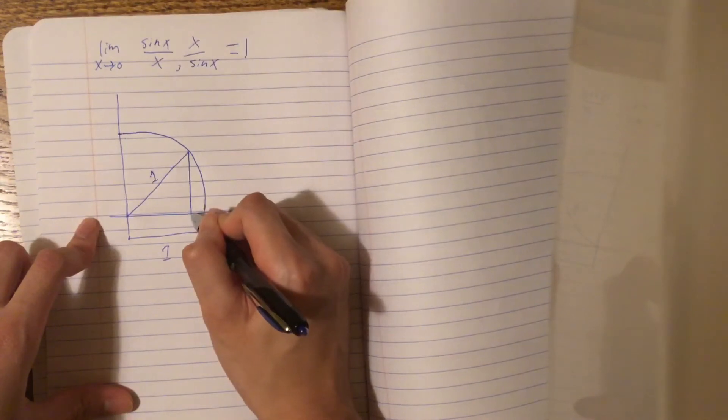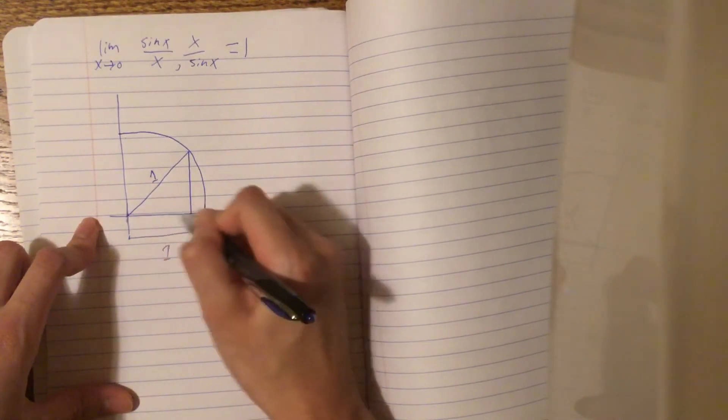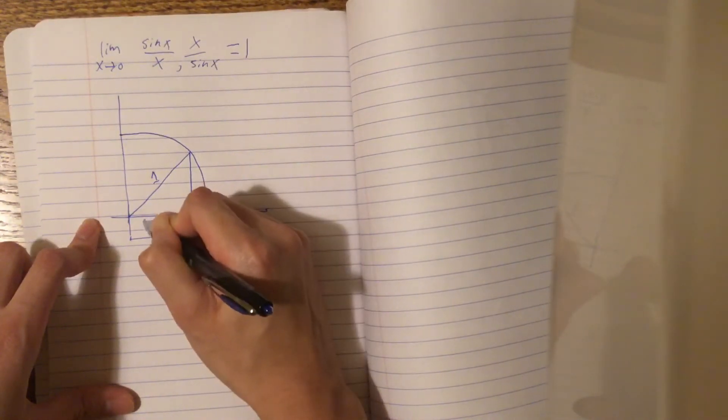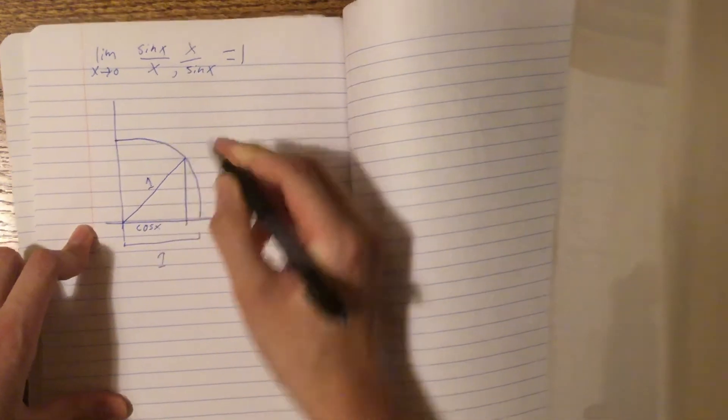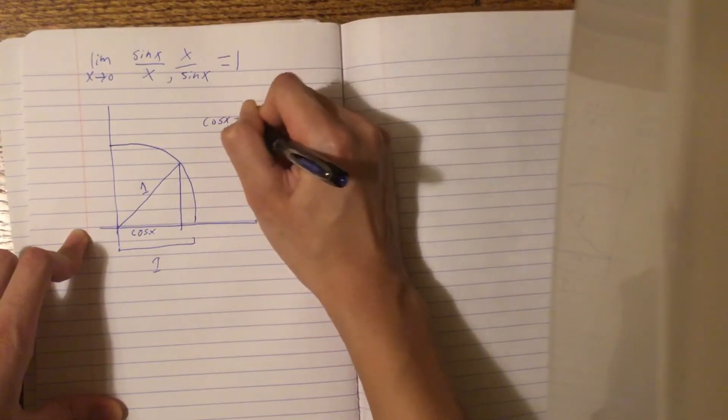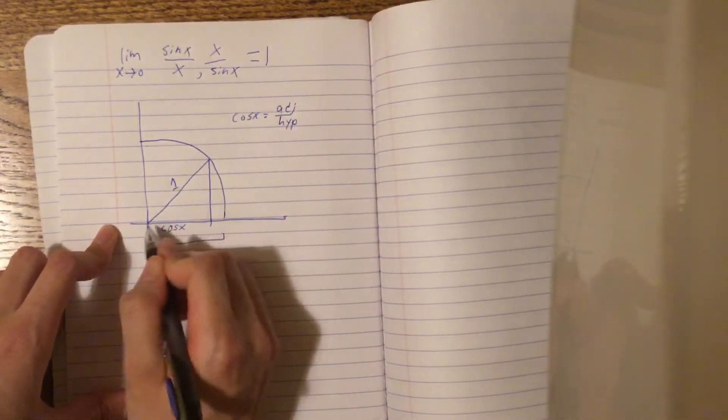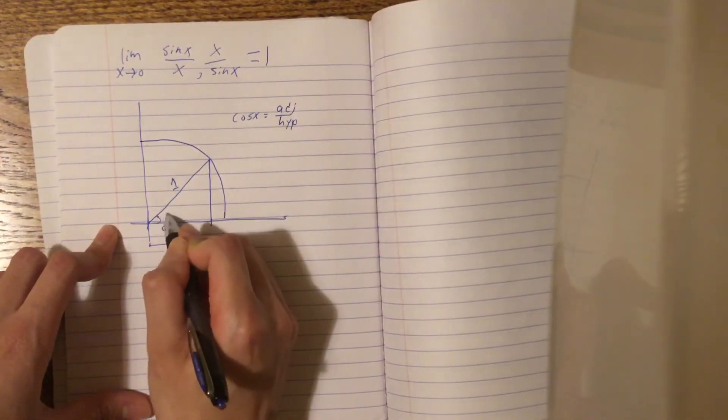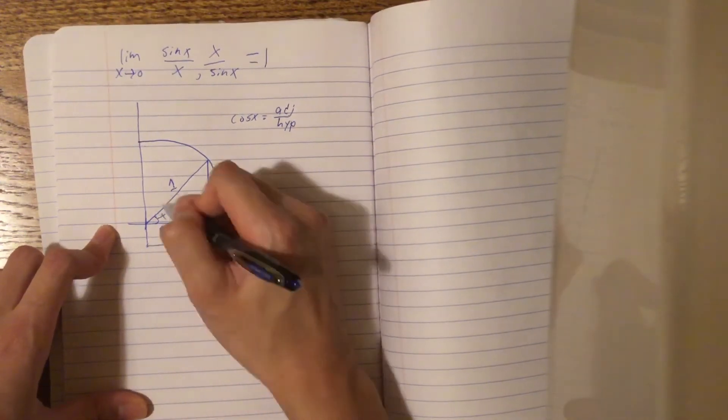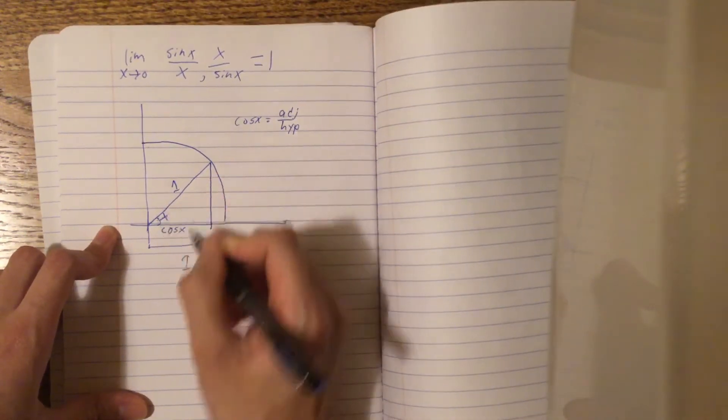And then now let's start defining lengths. So from here to here, this has length of cosine of x, because cosine of x is adjacent over hypotenuse, and this side right here is adjacent to x. Oh yeah, I should have defined the angle first, but this is angle x.